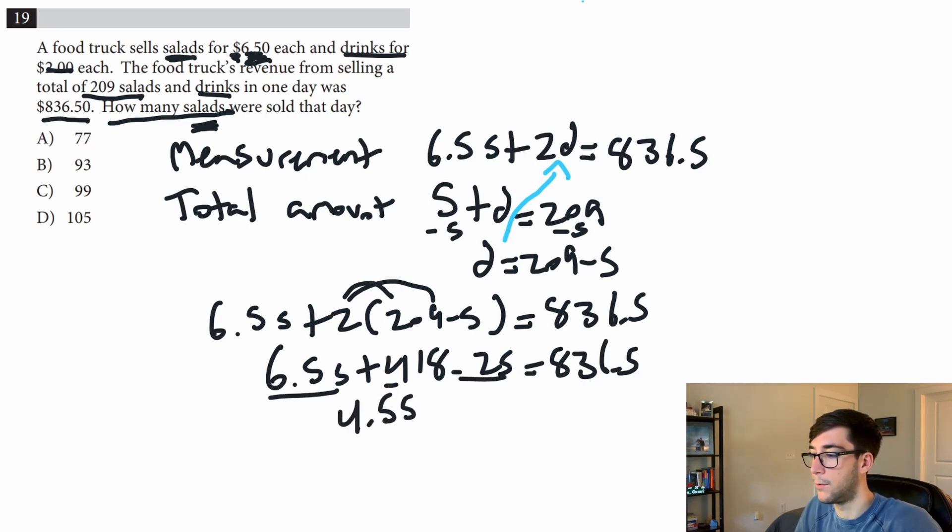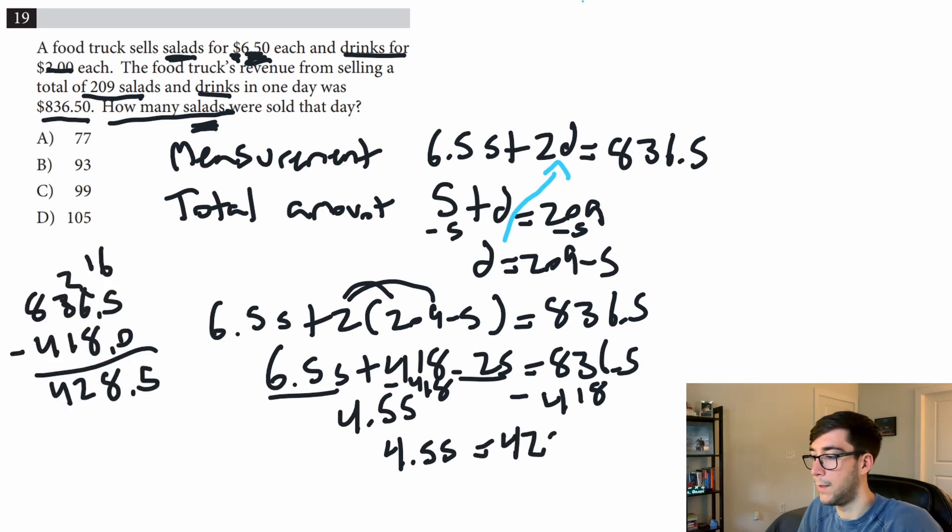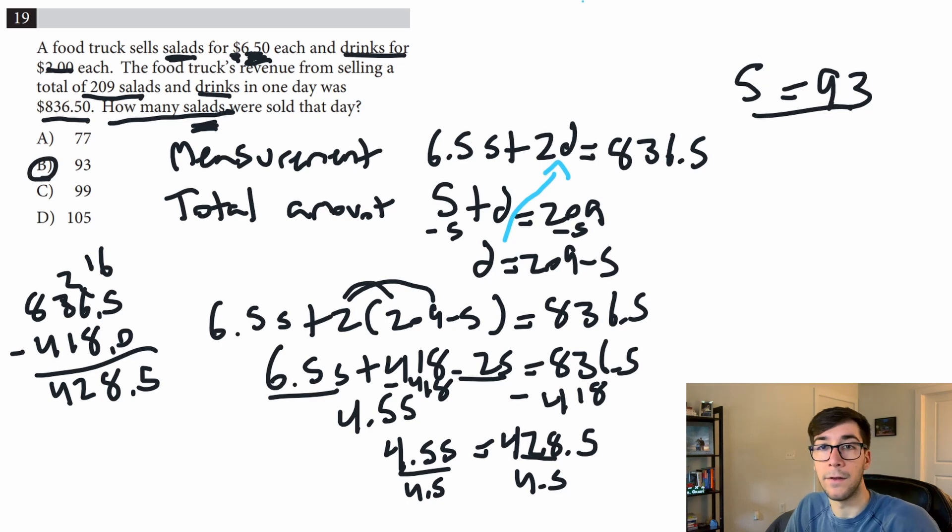And we get 4.5s = 428.5. And now we divide both sides by 4.5, and when we do that we get s = 93. And 93 is our answer.